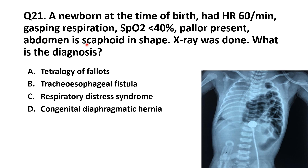The abdomen is scaphoid in shape and an X-ray was done. Here you can see the X-ray — this is the characteristic X-ray I have already explained in the chest X-rays in one of my videos. You can see bowel loops which are herniated from the abdomen into the lung field.